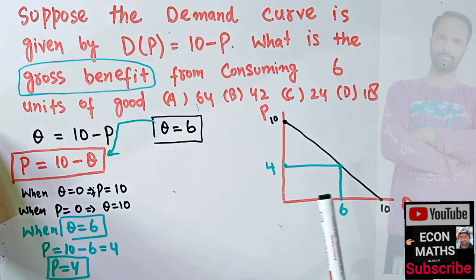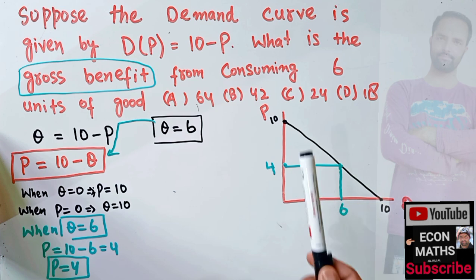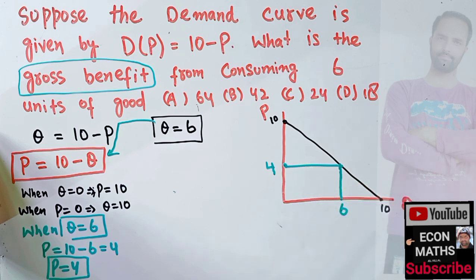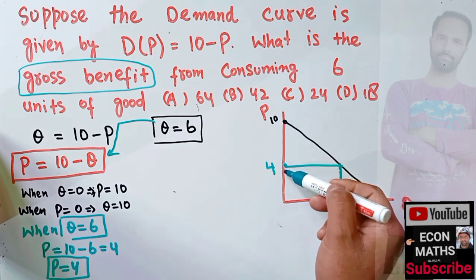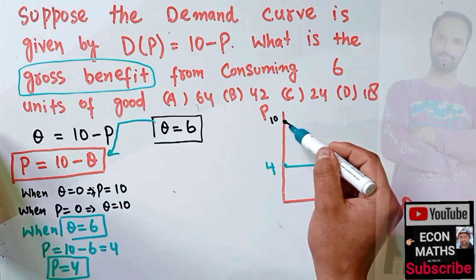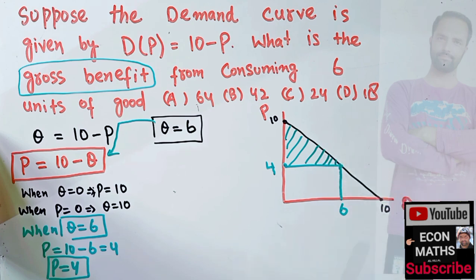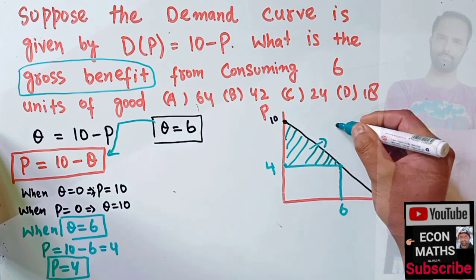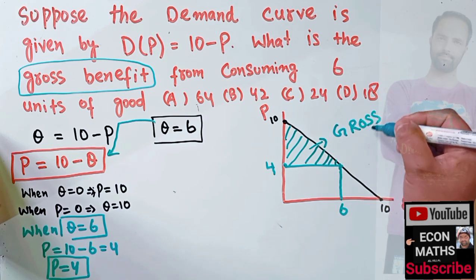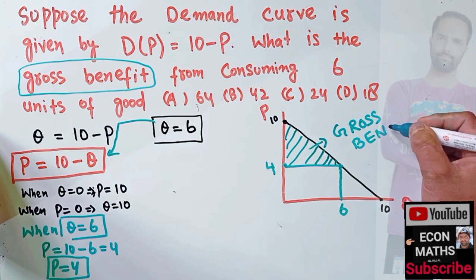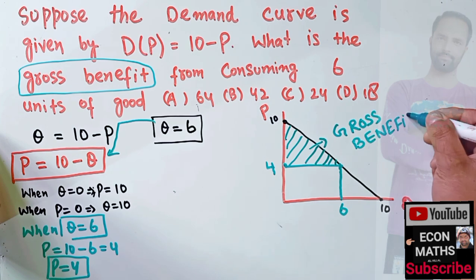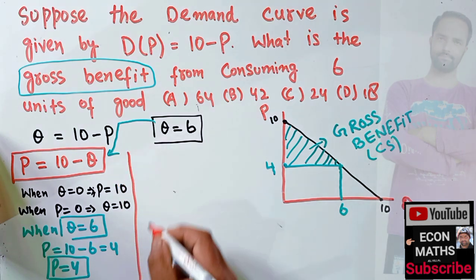Consumer surplus is simply the difference between the price that the consumer is willing to pay and the price he is actually paying — the difference between 10 and 4. The consumer surplus is the area of this right-angle triangle. This area is what we call the gross benefit, which is also referred to as consumer surplus.